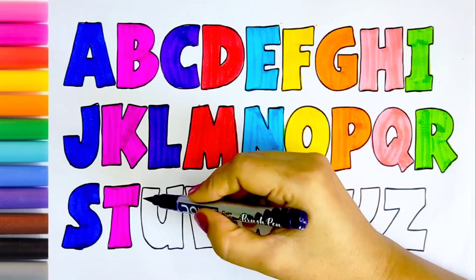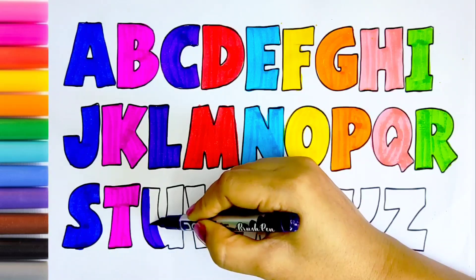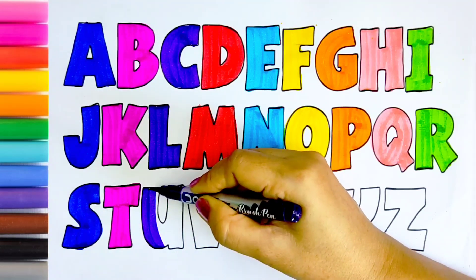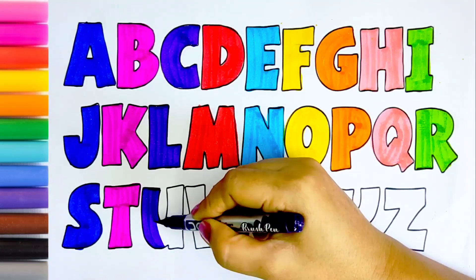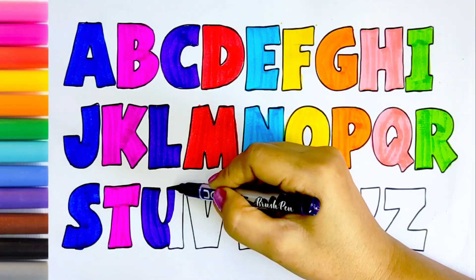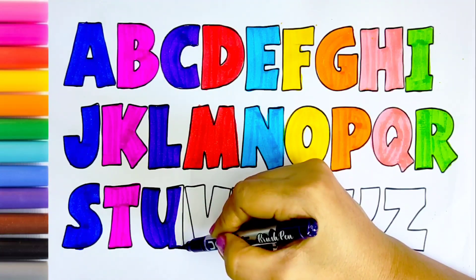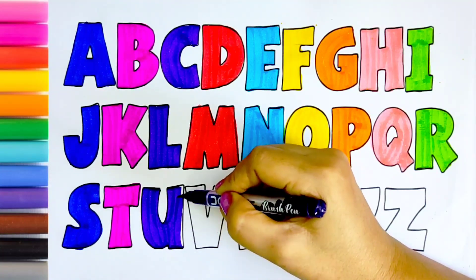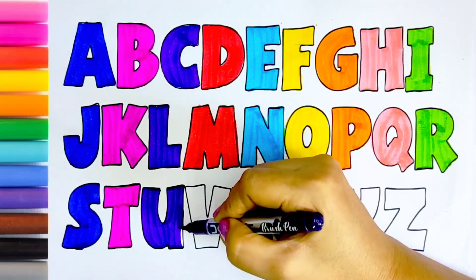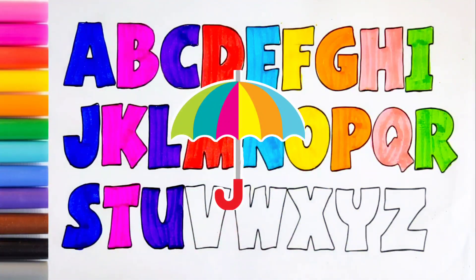Purple color. U. Q, R, S, T, U, V, W, X, Y, Z. Now I know my ABCs, next time won't you sing with me. U for umbrella, U for umbrella.